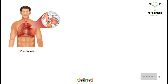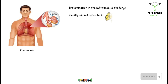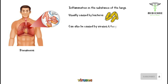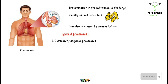Pneumonia is defined as inflammation in the substance of the lung, which is usually caused by bacteria. However, it can also be caused by viruses and fungi. There are several different types of pneumonia.